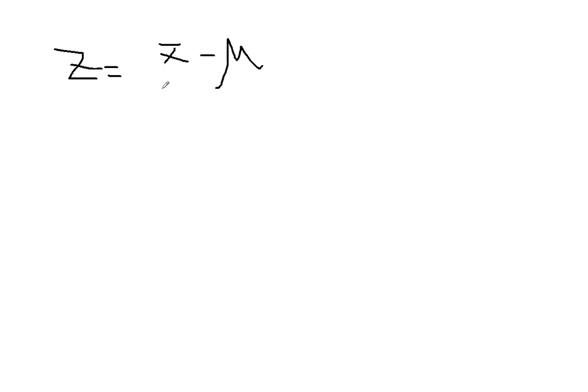As promised, we're going to talk about the t-distribution. Remember, the Z statistic has the form x-bar minus mu over sigma divided by square root of n. But sometimes we do not know sigma — sigma is the standard deviation in the population, it's a parameter. So we have to replace it with something, and the best replacement is its estimate from the sample, which is s.